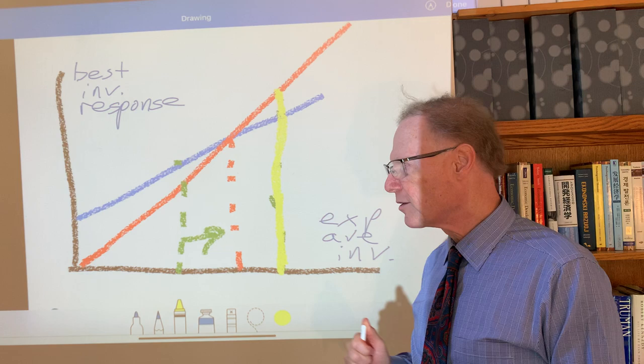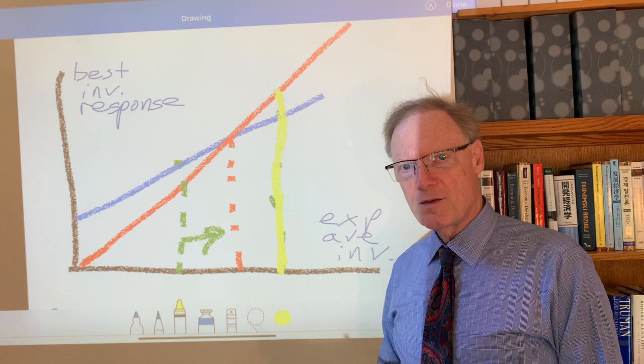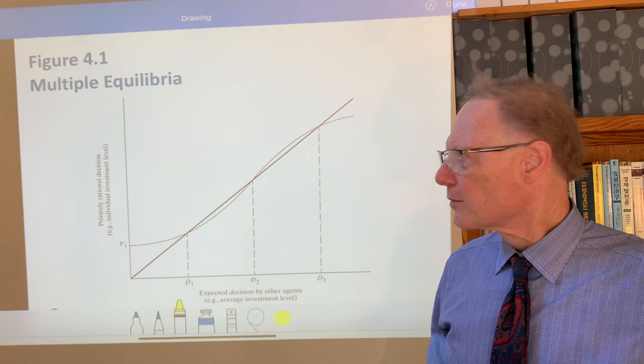All of them have something to do with increasing returns. Of course, increasing returns is a hallmark of modern economy. So it's not too surprising that we find it relevant. But this is introduced in the first graph in chapter four, the figure 4.1.